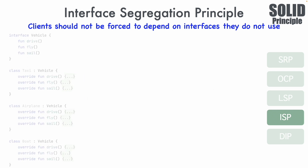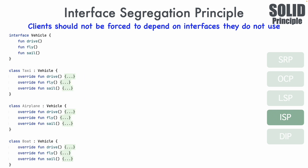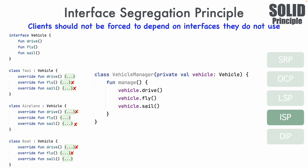One more example: an interface called Vehicle with classes Taxi, Aeroplane, and Boat all implementing it. You can already see the problems — Taxi cannot fly or sail, Aeroplane cannot drive or sail, and Boat cannot drive or fly. There is also an indirect problem: if you have a VehicleManager class that takes a Vehicle interface argument, and somebody passes a Taxi, it will throw an UnsupportedOperationException on the fly and sail functions.